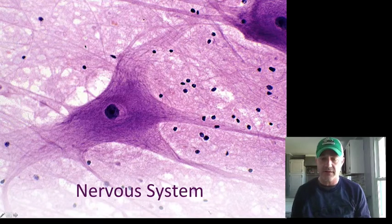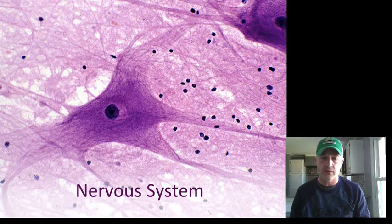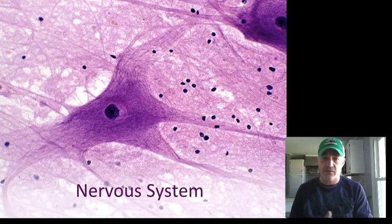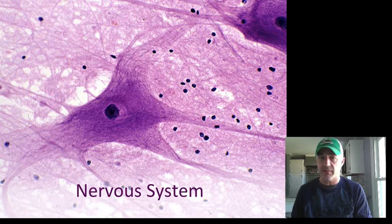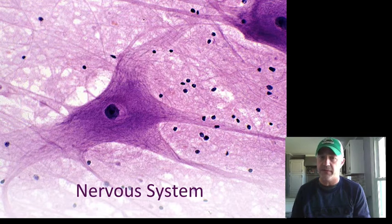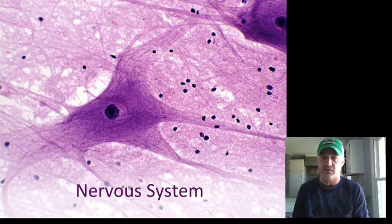Hi, Histology. We're going to start talking about the nervous system today. In this first show, we're really just going to talk about what the nervous system is and the basic cell of the nervous system, which is the neuron.